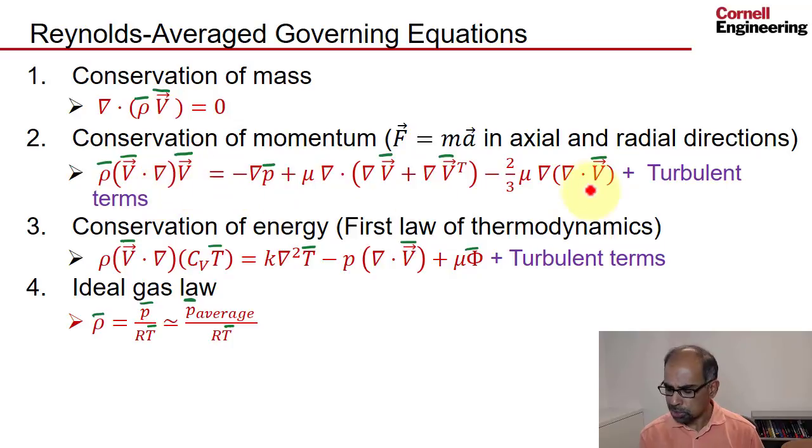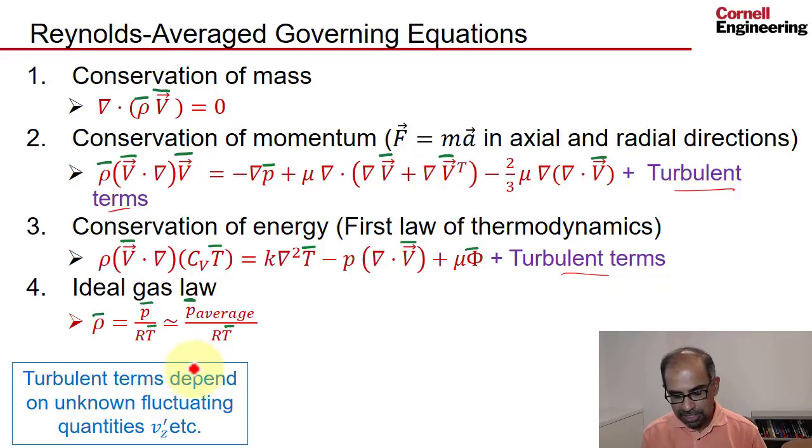Conservation of momentum looks almost the same except that you have these extra turbulent terms, and similarly for conservation of energy you get these extra turbulent terms. These turbulent terms depend on unknown fluctuating quantities like v_z prime and so on, and so you need to have information about the fluctuations to calculate that.